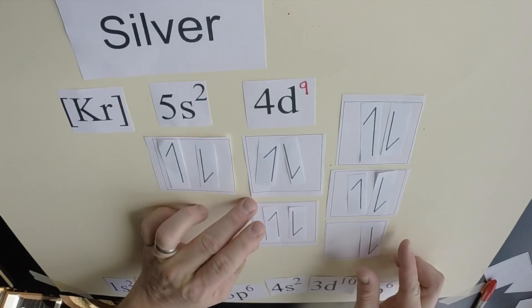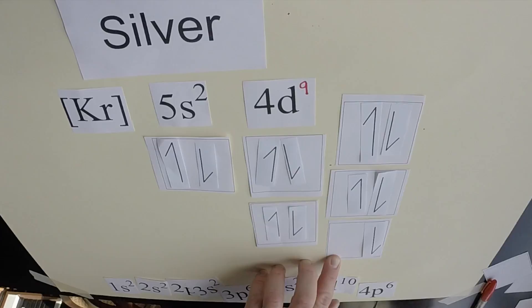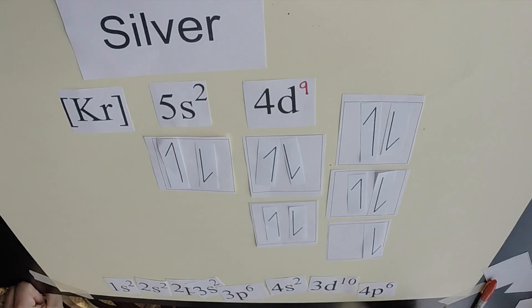There we go. So silver has one empty orbital space within the d sub-level, and the rest of these are filled. But that would be an orbital diagram for silver for its noble gas shortcut electron configuration.